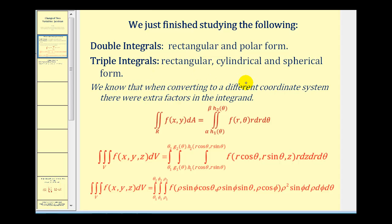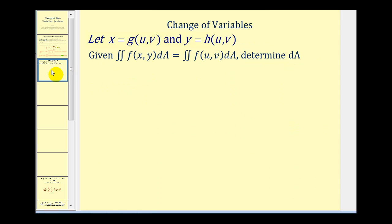We know that when converting to a different coordinate system, there are extra factors in the integrand. For example, for double integrals in polar form we had an extra factor of r in the integrand, as well as in cylindrical form for triple integrals. We also had the extra factors of rho squared sine phi when converting from rectangular to spherical form. So we're going to develop a formula that tells us, when we switch coordinate systems, what the extra factors in the integrand would be — often called the integrating factor.